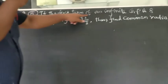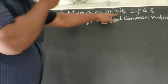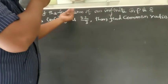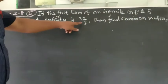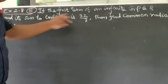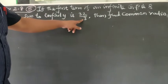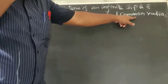If the first term of an infinite GP is 8 and its sum to infinity is 32/3, then find the common ratio r.